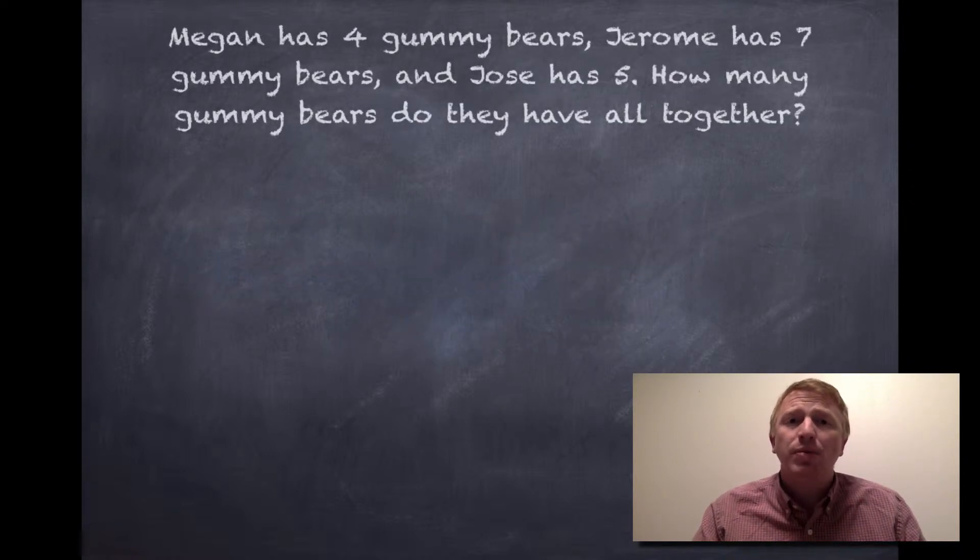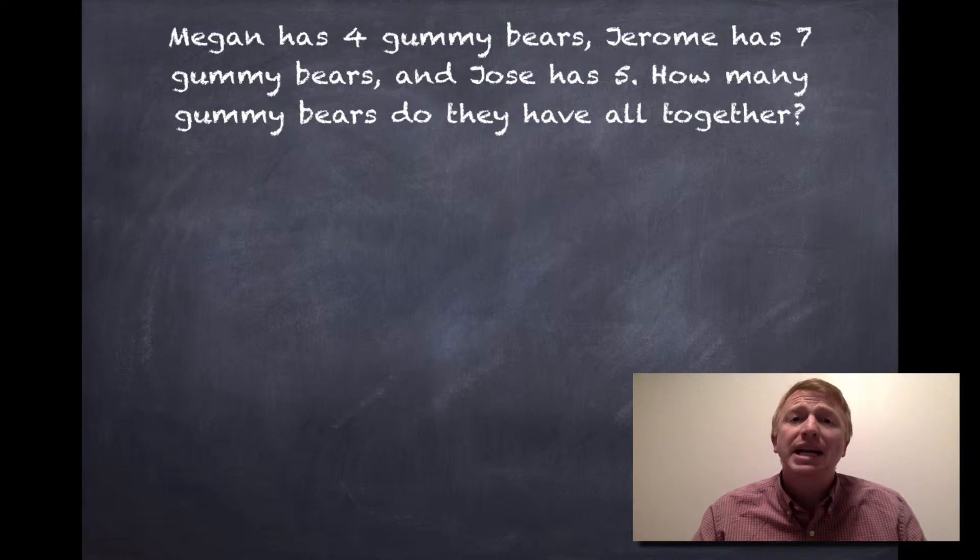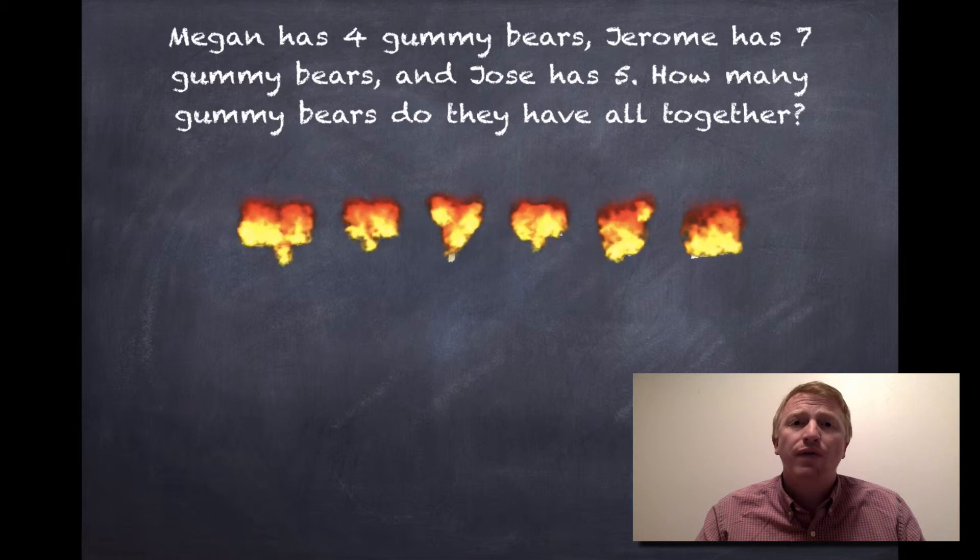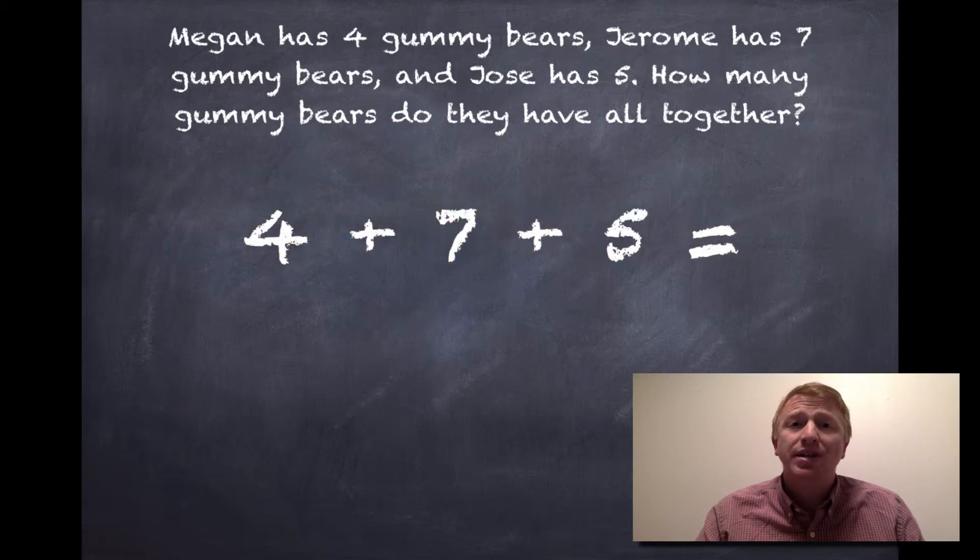This is the problem that we're going to be working on today. Megan has four gummy bears. Jerome has seven gummy bears. And Jose has five. How many gummy bears do they have all together? Now, if I wrote this problem in number form, it would look just like this. Four plus seven plus five.